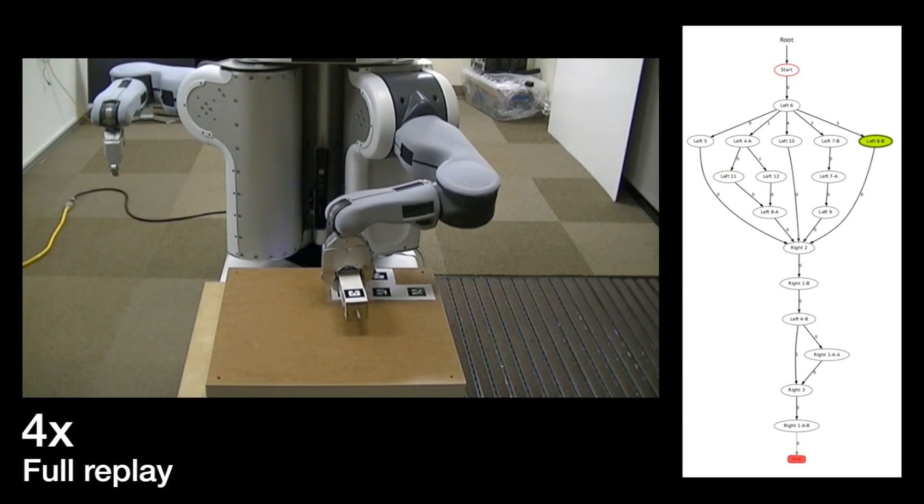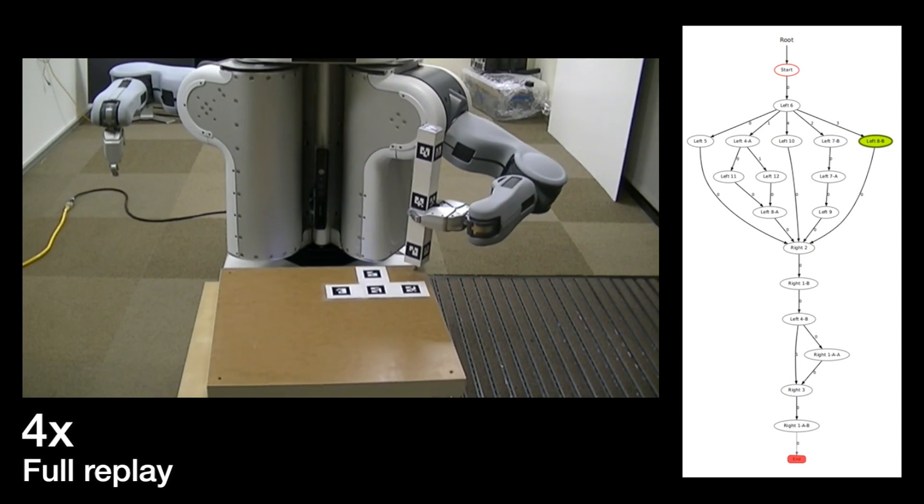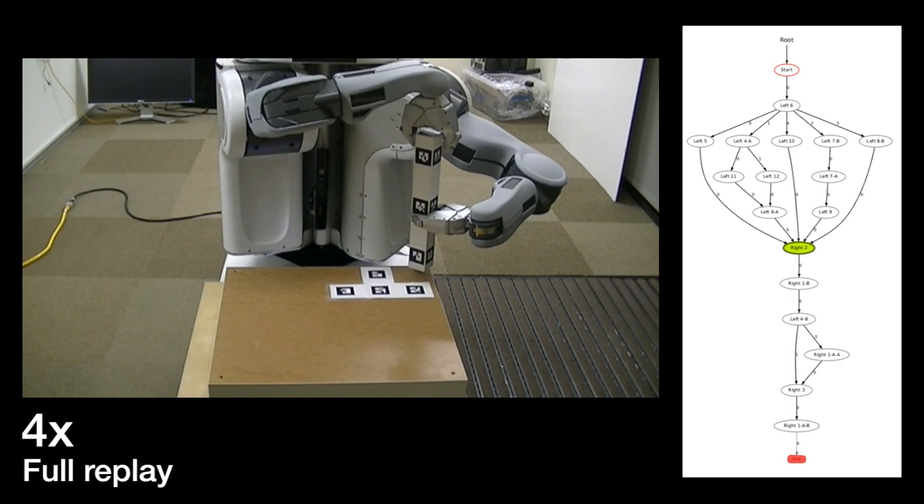Finally, we show a full execution of the task from start to finish, in which no contingencies are encountered, showing that the interactive corrections have not interfered with the policy in the nominal case. It can be seen that the robot, yet again, takes a different path through the finite state machine, avoiding the recovery behaviors.